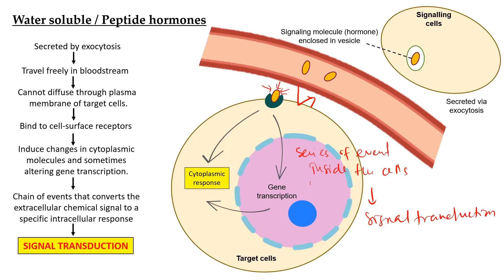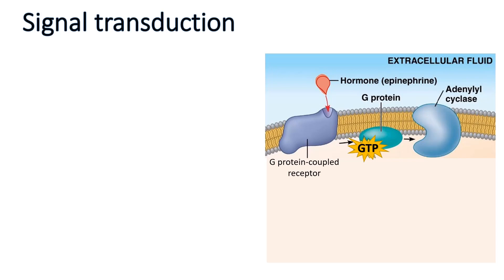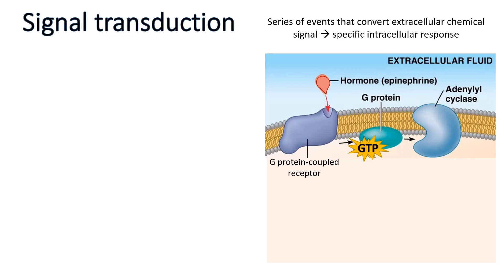In the water-soluble hormone, the hormone is enclosed in a vesicle in the signaling cell and does not need a carrier protein to be transported in the blood. The most important thing is that it needs to bind to the cell surface receptor on the target cell. Signal transduction is a series of events that converts an extracellular chemical signal to a specific intracellular response — to transduce means to convert the signal outside the cell to a response inside the cell.